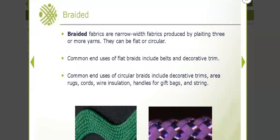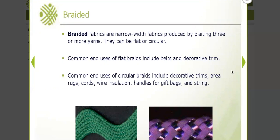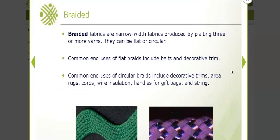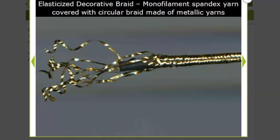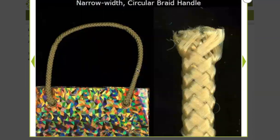We talked about braiding. These are braided fabrics — we use braiding for rugs, cords, and wire insulations. Sometimes handles for gift bags or strings can be flat or circular. In this circular example, there's a monofilament spandex inside and metallic yarns are braided over it. This handle is made by braiding.